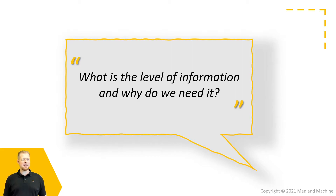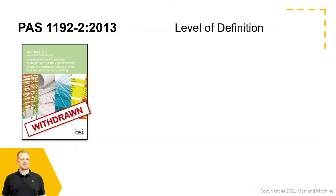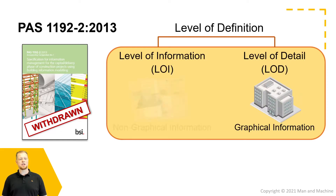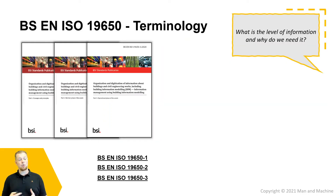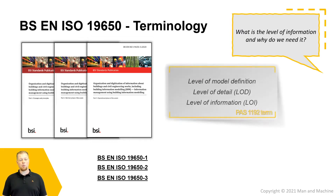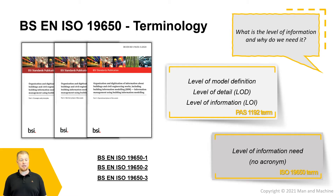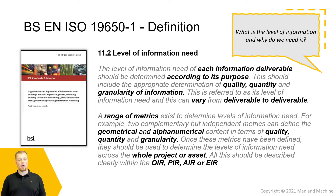Let's have a quick understanding of what Level of Information Need is and why we need it. Looking back at PAS 1192 Part 2, Level of Definition was originally defined as the combination of Level of Information and Level of Detail, covering both non-graphical and graphical information. Moving into the new wave around ISO 19650, we've moved away from Level of Model Definition and more into the terminology called Level of Information Need. Within ISO 19650 Part 1, Level of Information Need focuses on each individual information deliverable, determining its need and purpose, including its use, who's going to use it, who's going to produce it, how it's going to be produced, and the granularity of the information being produced.